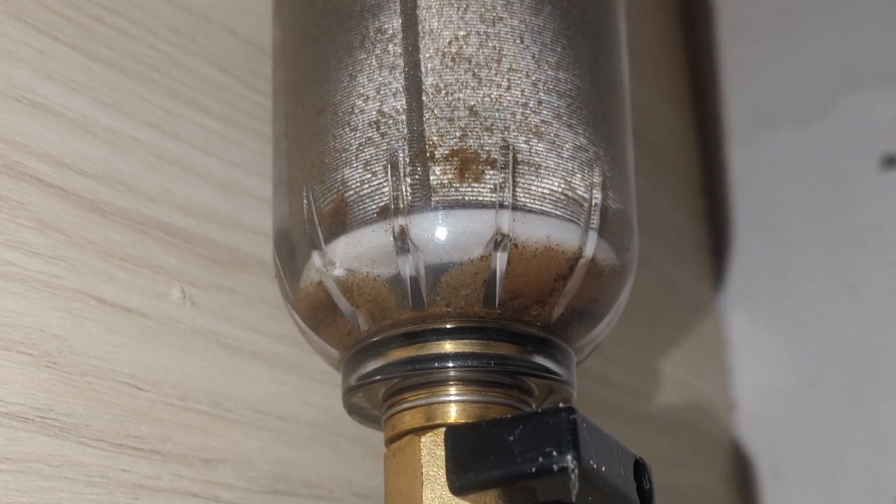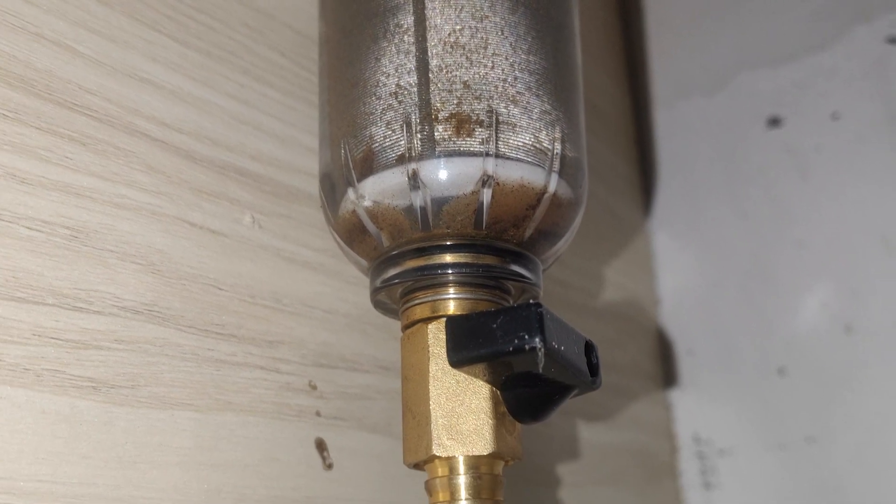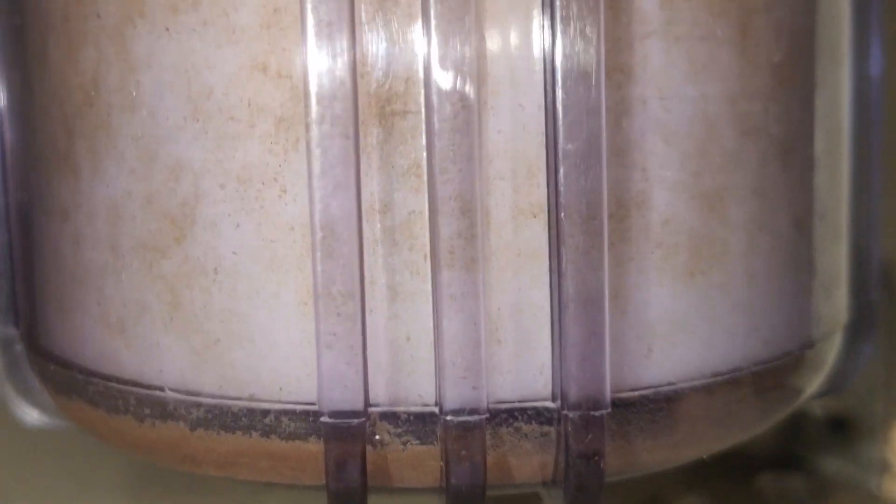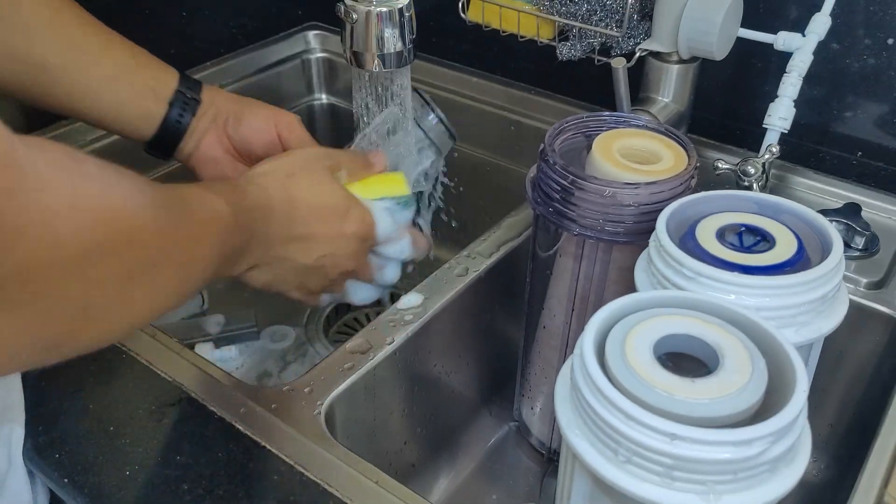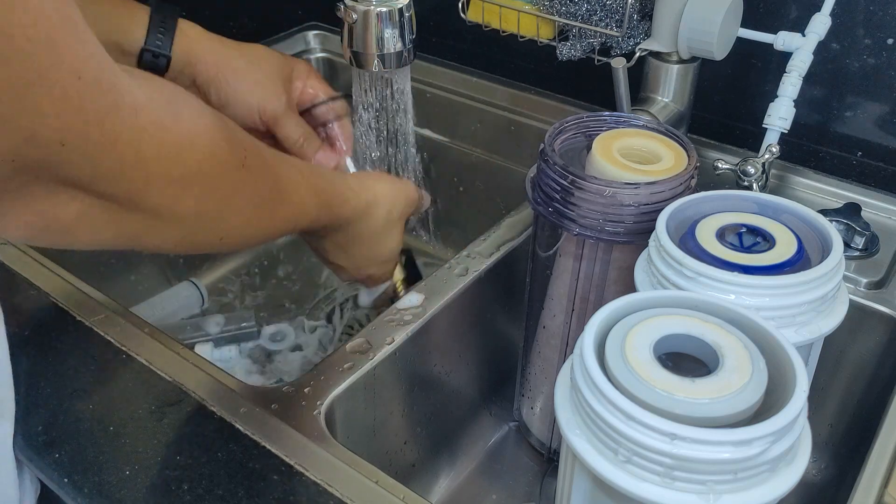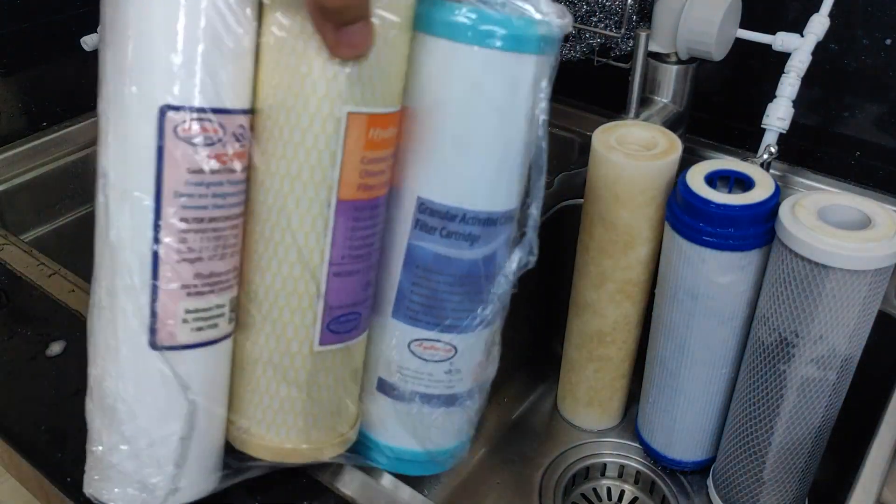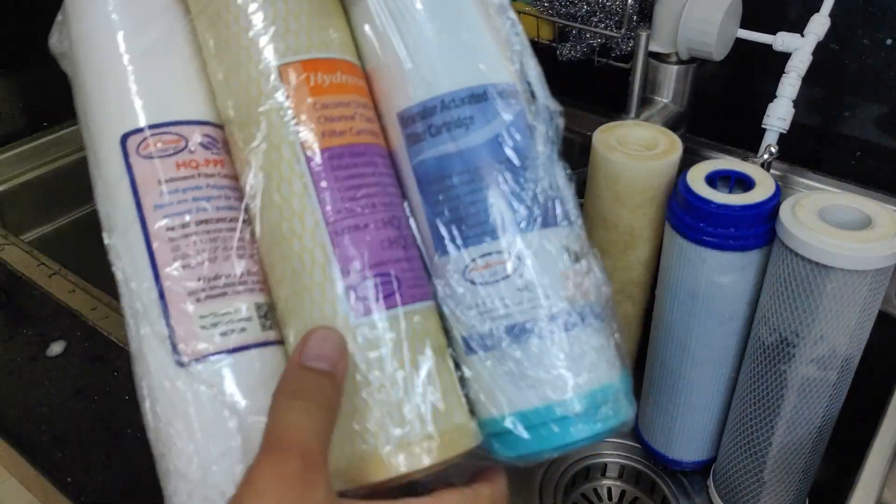What you are seeing right now is an example of sediments or TDS collected at the bottom of my RO first stage and pre-filters. Here comes the importance of regular filter replacement maintenance, which you can check on my next video, but for now let's talk about TDS.